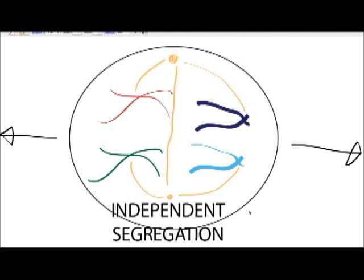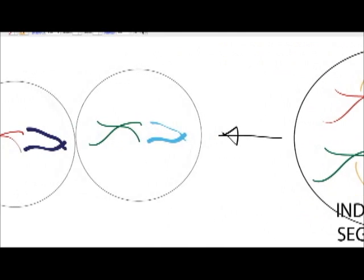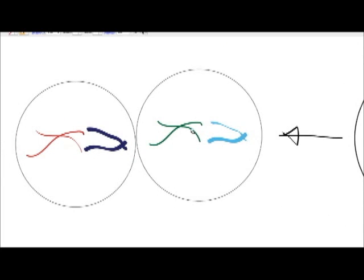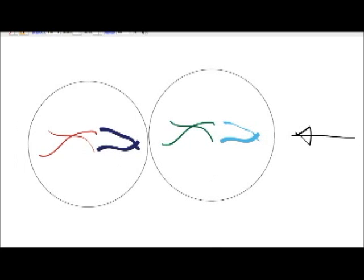Another thing that causes variation in meiosis is independent segregation. This cell is in metaphase because the spindle fibres are attached to the centrioles and the chromosomes are aligned in homologous pairs. Going from this arrangement, it can form two cells after meiosis 1 — one with a red and a dark blue chromosome, and one with a green and a light blue chromosome — two completely different cells, as expected.